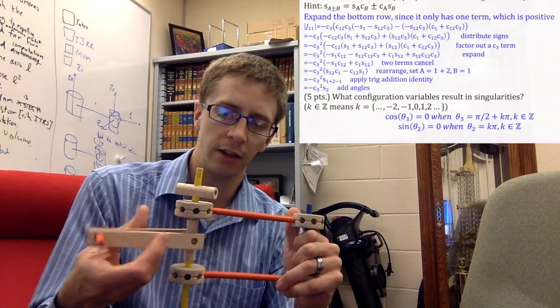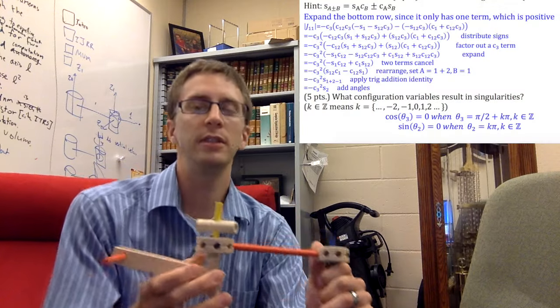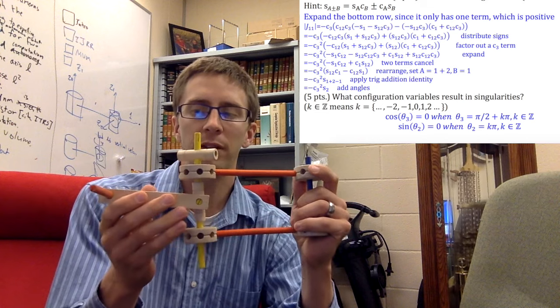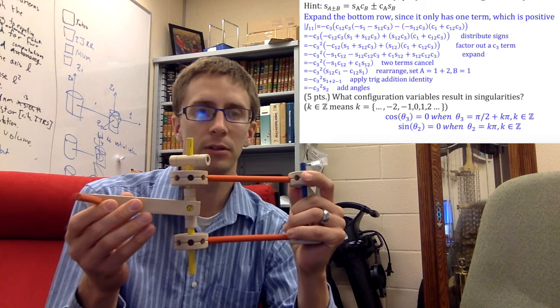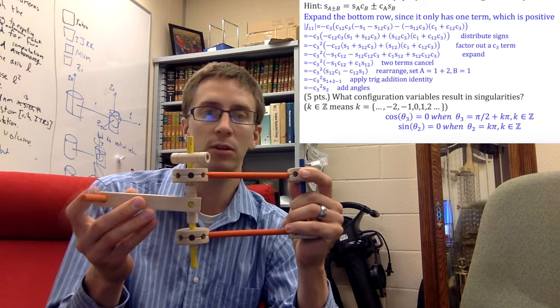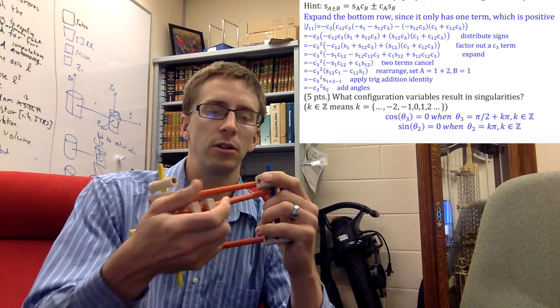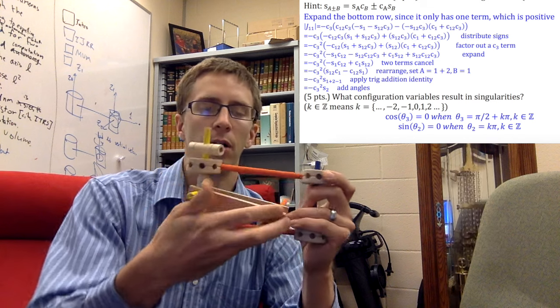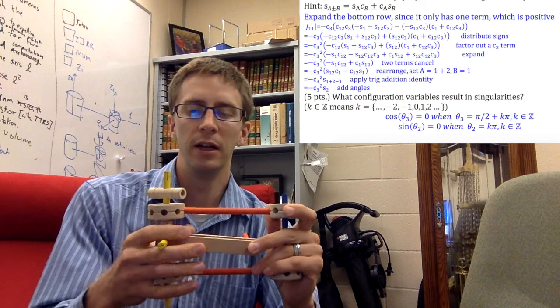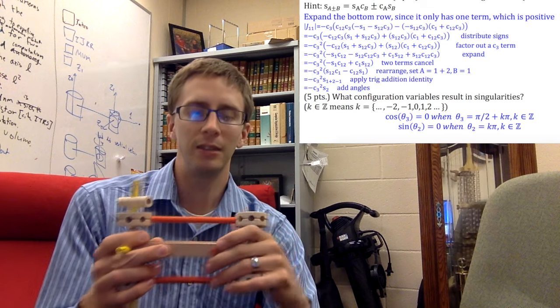So the other singularity that we had was related to the second joint. And it happened whenever this joint was pointed straight out. So this is when the sine of theta 2 equals 0. That also is true when we're pointed back in ourself. And so you can see that this is a singularity again.